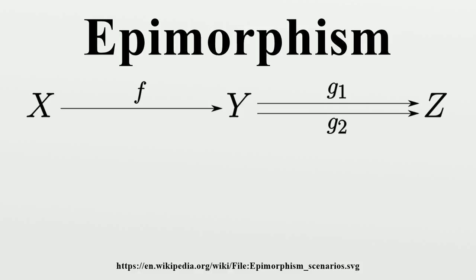To prove that every epimorphism f: X→Y in Set is surjective, we compose it with both the characteristic function g1: Y→{0,1} of the image f(X) and the map g2: Y→{0,1} that is constant 1.